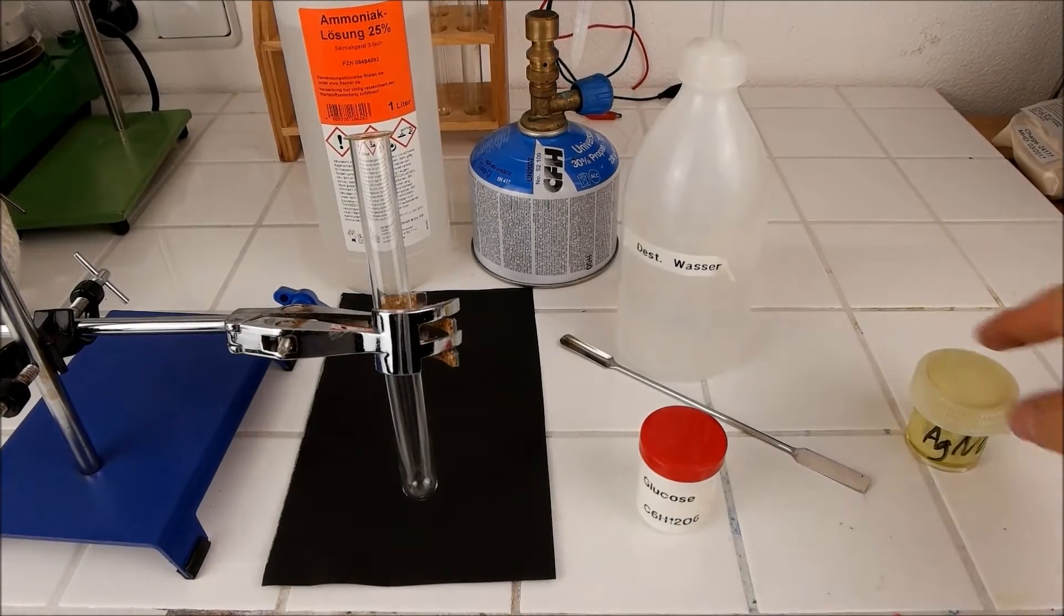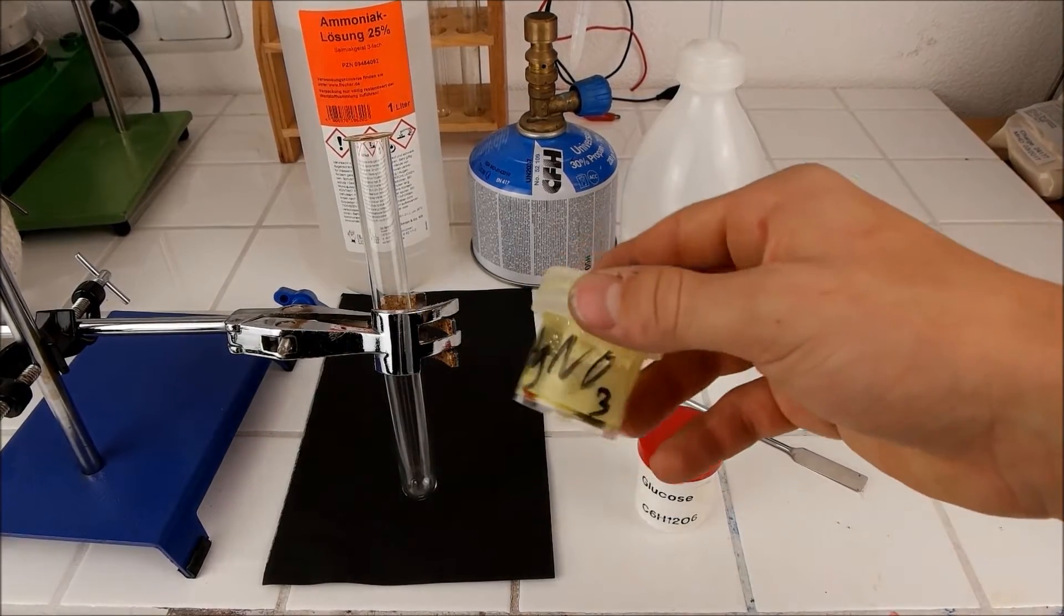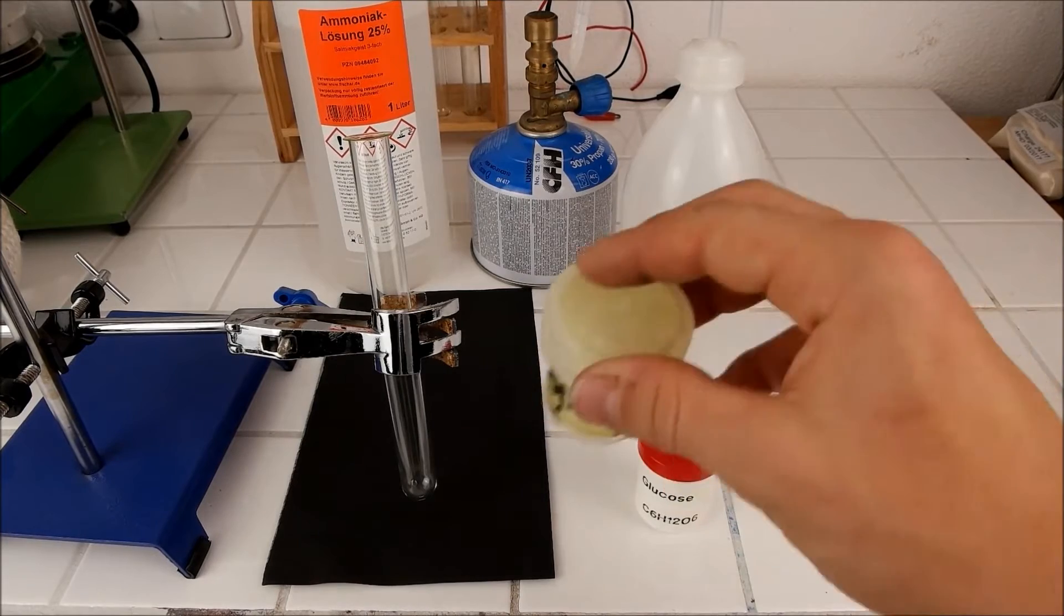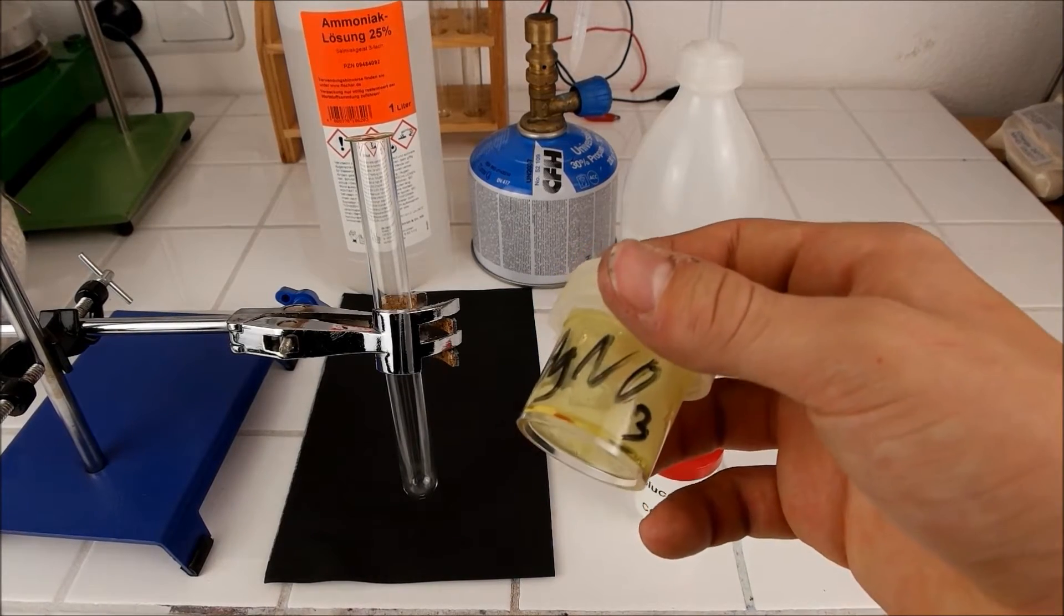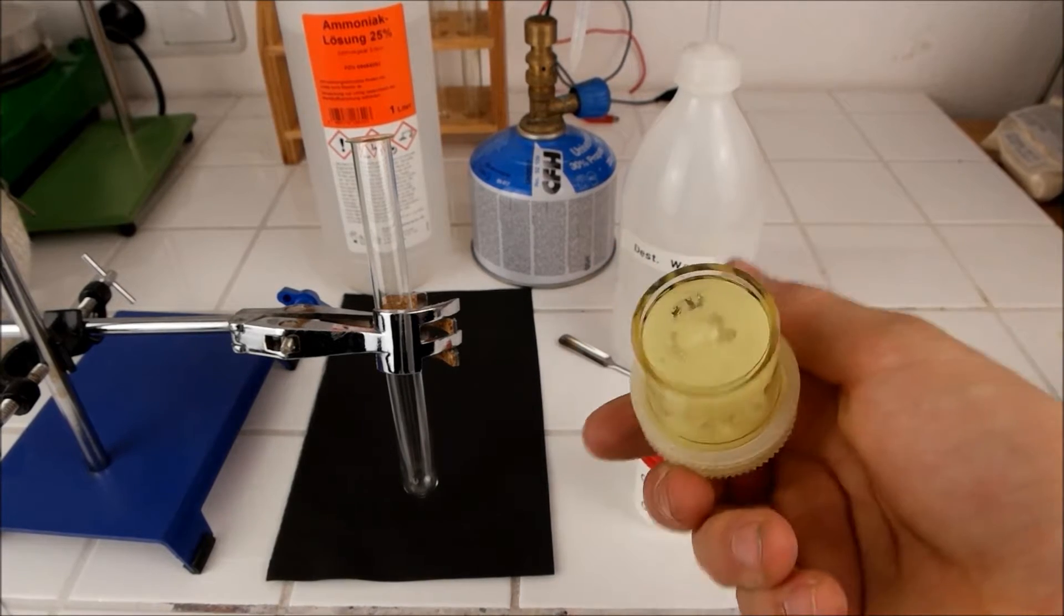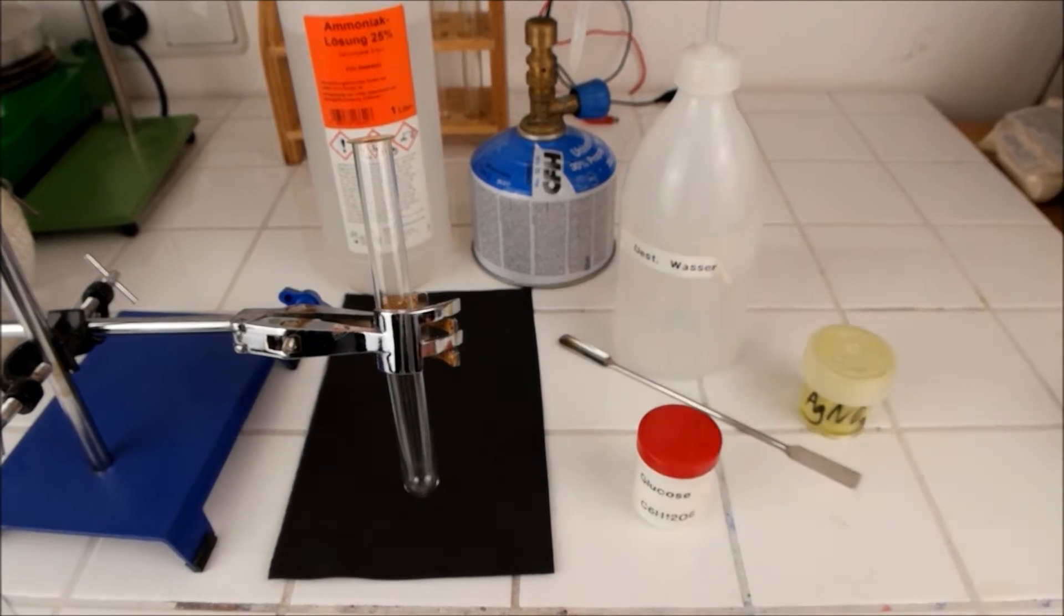All you need is a so-called Tollens reagent, which is just silver nitrate. I made it myself, that's why it's a bit yellow, just by pouring some HNO3 on elemental silver. That's why it's pretty expensive, it's made from real silver.